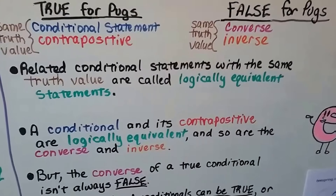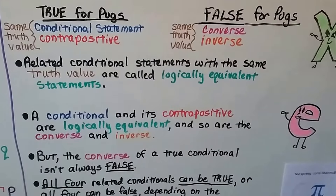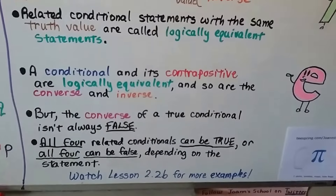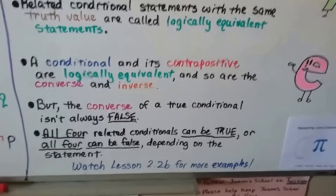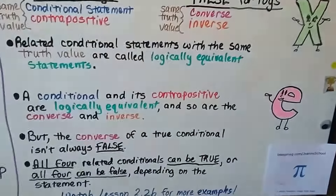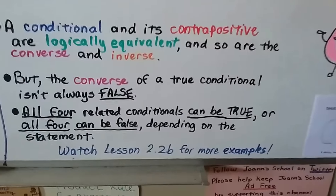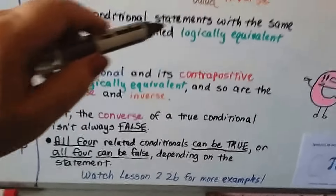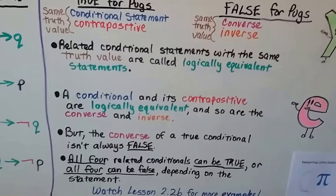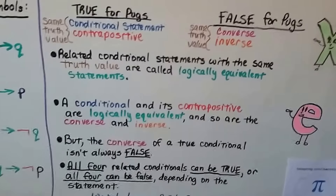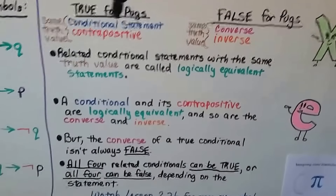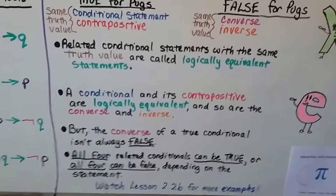Related conditional statements with the same truth value are called logically equivalent statements. The conditional and its contrapositive are logically equivalent, and so are the converse and inverse. But be careful — the converse of a true conditional isn't always false. In this case it is, but all four related conditionals can be true, or all four could be false, depending on the statement. For our pug statement, the conditional was true and the contrapositive was true; the converse and inverse were both false. It just depends on the statement.